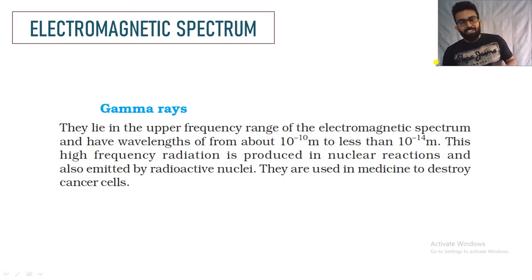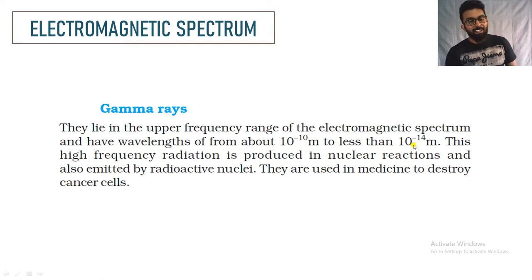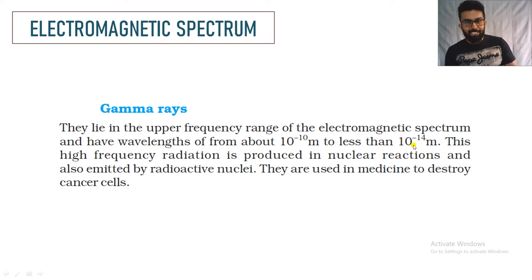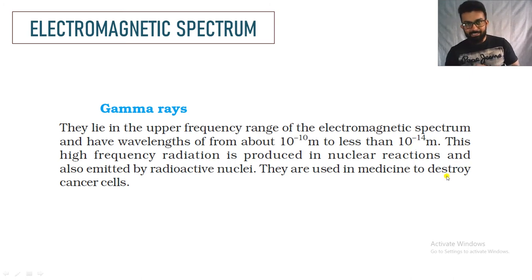Gamma rays have a very high frequency with wavelengths ranging from 10⁻¹⁰ meter to less than 10⁻¹⁴ meter. Gamma rays are produced by nuclear reactions. Because of their very high energy and frequency, they are used in medicine to destroy cancer cells.